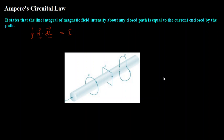The second point is: we can consider the closed path to be symmetrical or asymmetrical — it does not matter. But if you consider an undefined shape or an asymmetrical closed path, then mathematically it becomes difficult to calculate the magnetic field intensity. So, we should always prefer a symmetrical closed path while mathematically computing the magnetic field intensity.